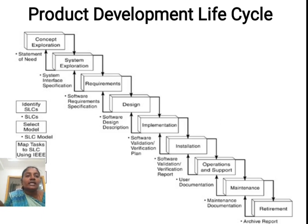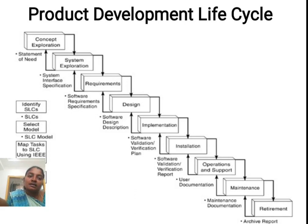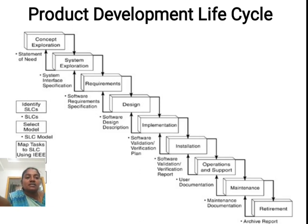This is the Product Development Life Cycle Diagram. The steps are: Concept Exploration, then System Exploration, then Requirements, then Design, then Implementation, then Installation, then Operations and Support, then Maintenance, and then Retirement. These are the Software Product Development Life Cycle processes in Software Project Management.